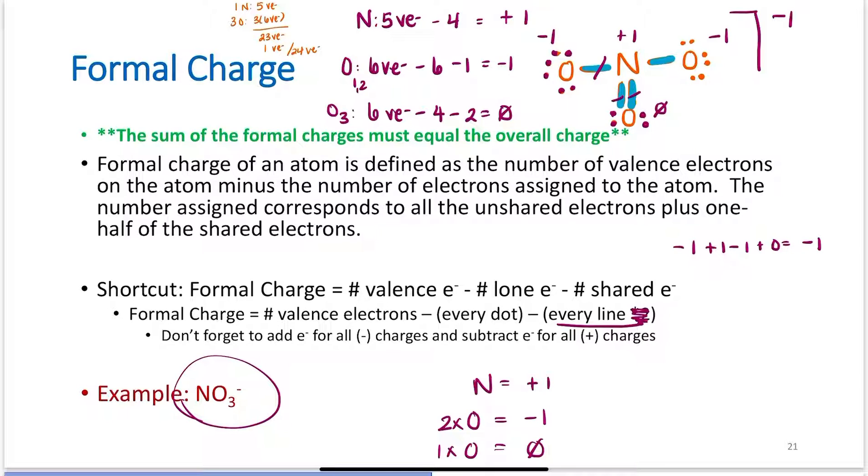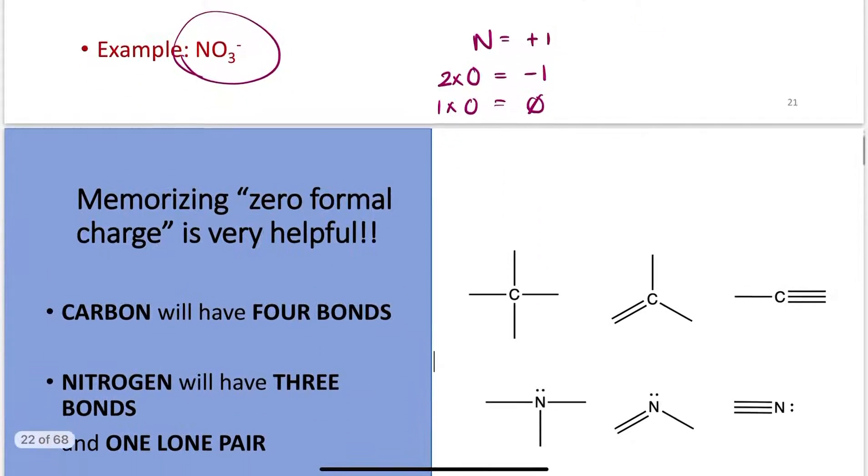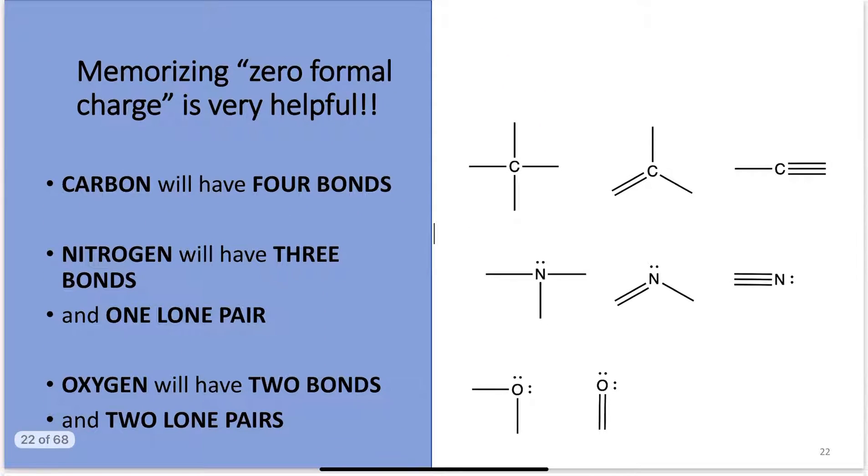We will do more formal charges as we work more examples, so you guys will see it a little bit more. It would be helpful if you memorize when you have 0 formal charge, though. If carbon has 4 bonds, it has 0 formal charge. It's easier than writing it all out. The reason is carbon has 4 valence electrons. So, if it has 4 bonds, 1, 2, 3, 4, equals 0.